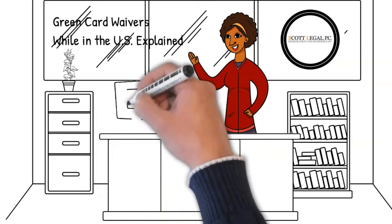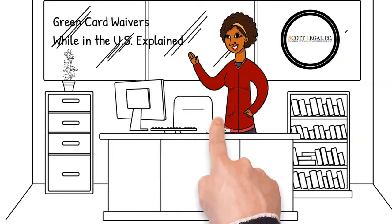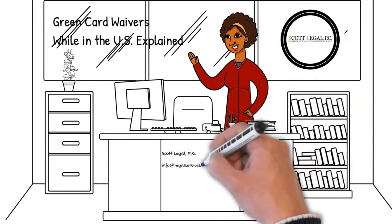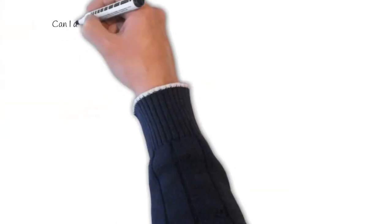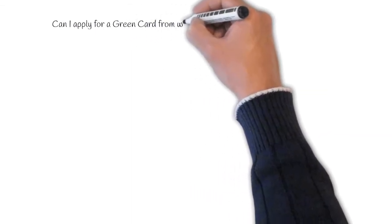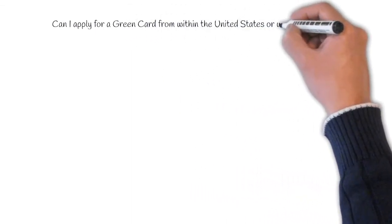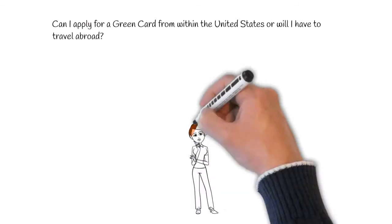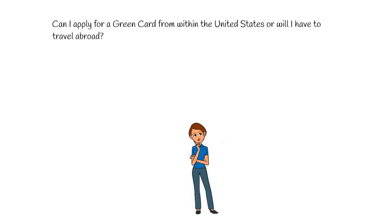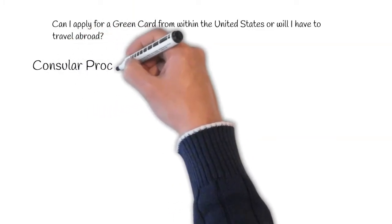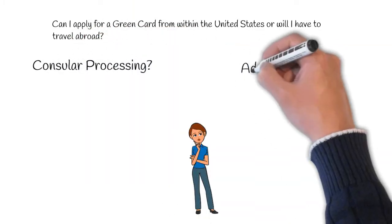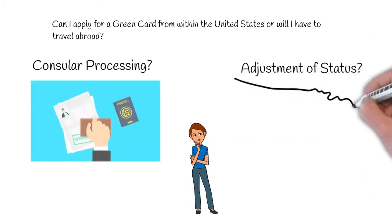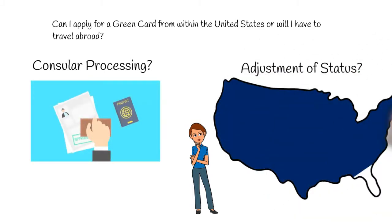This video explains the various waiver scenarios that could come up when applying for a green card. Is a potential green card beneficiary present in the U.S. eligible to file for a green card from within the U.S.? The best way to understand this issue is to understand that the normal process under immigration law is to apply for a green card from the beneficiary's country of birth through the process known as consular processing.